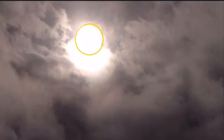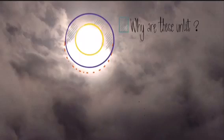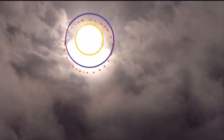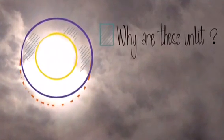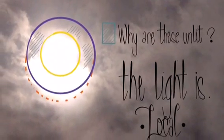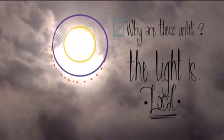We can see this by outlining the shape of the sun in yellow where it's lighting up the brightest, in orange, and then in purple is where it's supposed to be lit if the sun is in fact 93 million miles away. The reason these areas are unlit is because the light is local — it's an incoherent but closer local light.